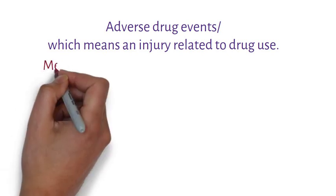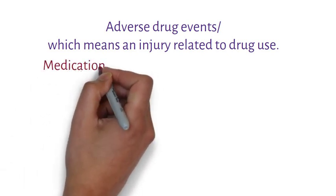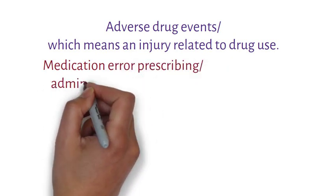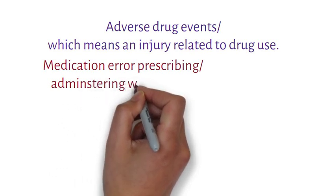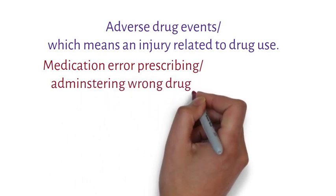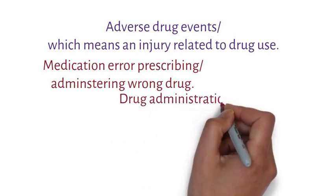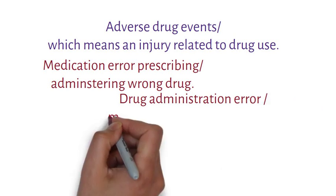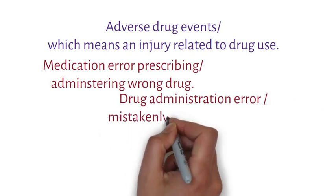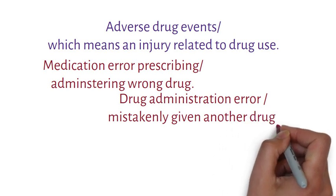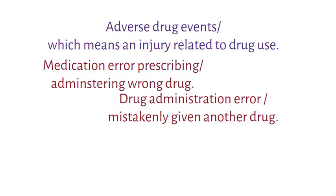Other kinds of errors include medication error, which is either prescribing, dispensing, or administering a wrong drug. Drug administration error is where the prescription is correct but the pharmacist has mistakenly given another drug. For example, a pharmacist dispensed Panadol for three months instead of Danazol. Overdose of Panadol can cause liver damage.